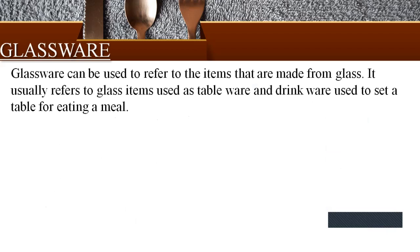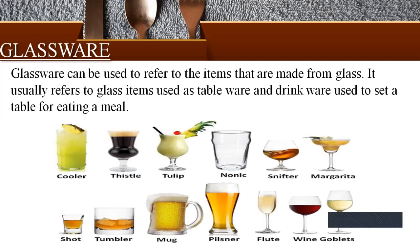Glassware refers to items that are made from glass. It usually refers to glass items used as tableware and drinkware, used to set a table for eating a meal. Food and beverage service outlets use a variety of glasses for different types of drinks. Glasses have the following parts: bowl, base, and stem. Silica, soda, ash, and lead are added to make the glass crystal and clear. We can have tumblers, footware glasses, and stemware glasses.